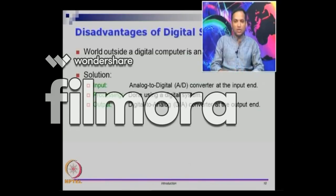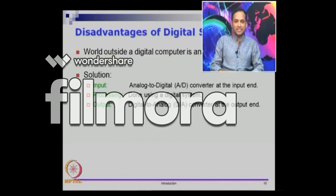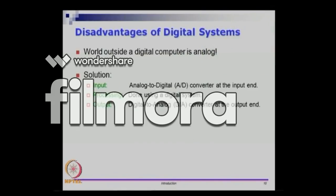You deal with the analog signals in the external world, but you capture them as digital signals and process all of them using digital systems. When you produce the output back, you convert it to analog. For the inputs to be converted to digital form, we use what are called ADCs or analog to digital converters, and when we produce the outputs, we use what are called DACs or digital to analog converters. DACs and ADCs are not in the scope of this course — you will probably learn about them elsewhere in other courses.